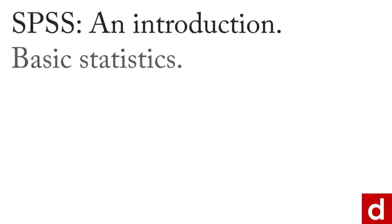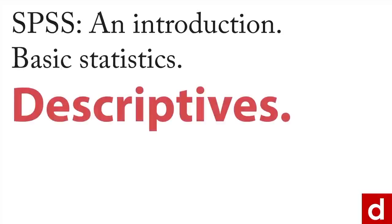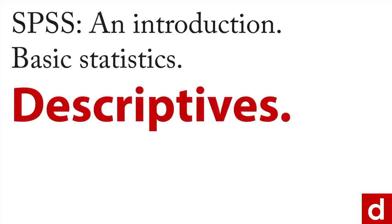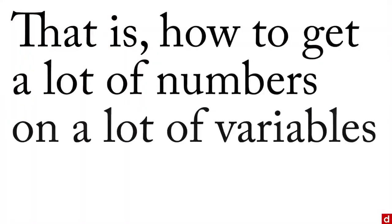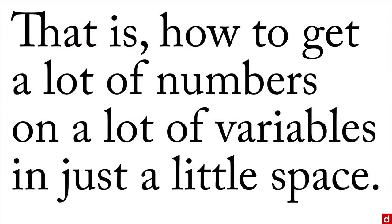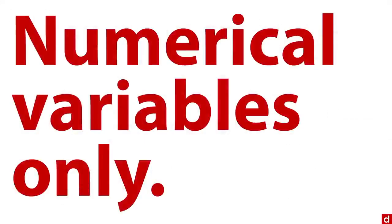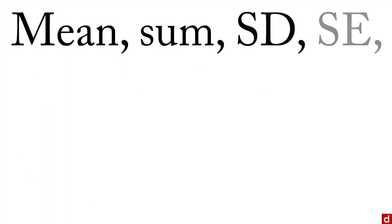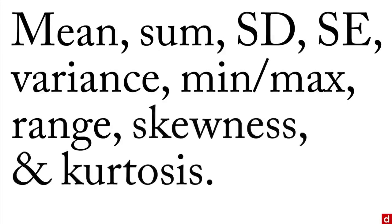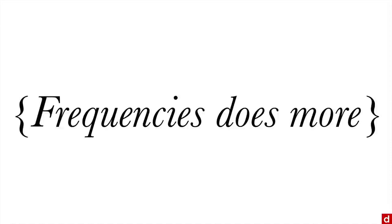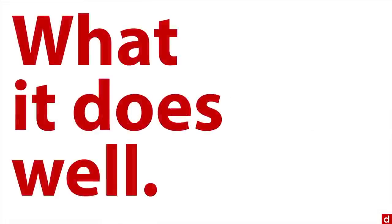For basic statistics, another very common choice is descriptives within SPSS. The neat thing about descriptives is that it allows you to achieve maximum density — that is, how to get a lot of numbers on a lot of variables in just a little space. There is a restriction: it works only with numerical variables. But if you have that, it can give you the mean, sum, standard deviation, standard error, variance, minimum and maximum, range, skewness, and kurtosis. It gives very concise, compact tabular output — easy to see a lot of information in a small space.